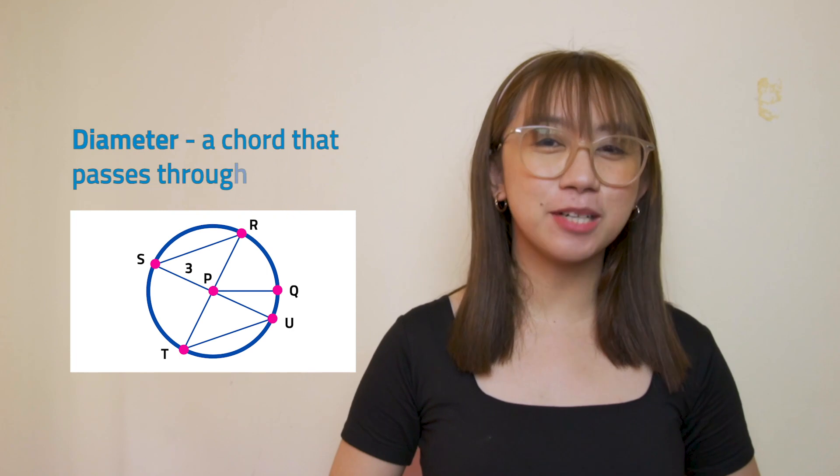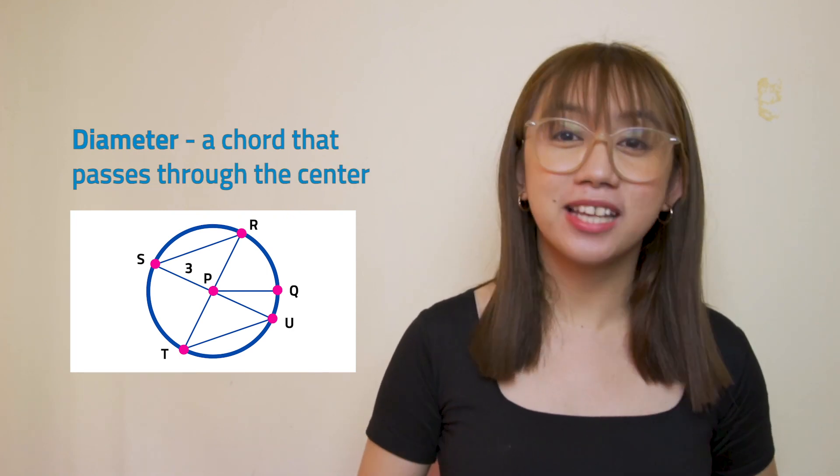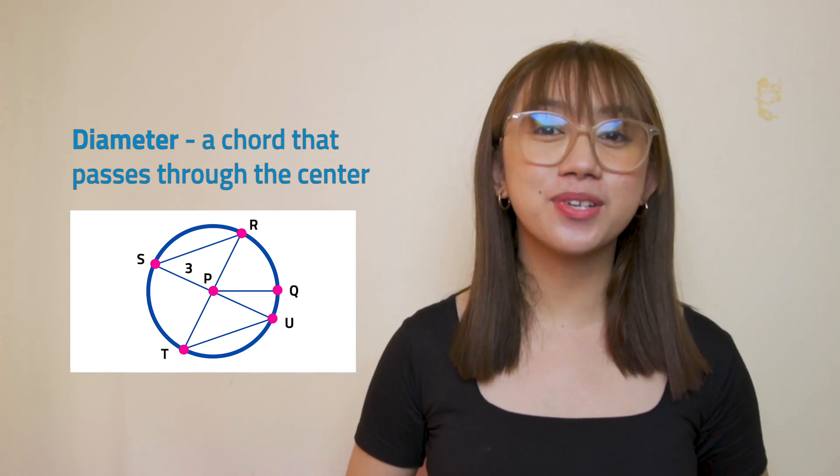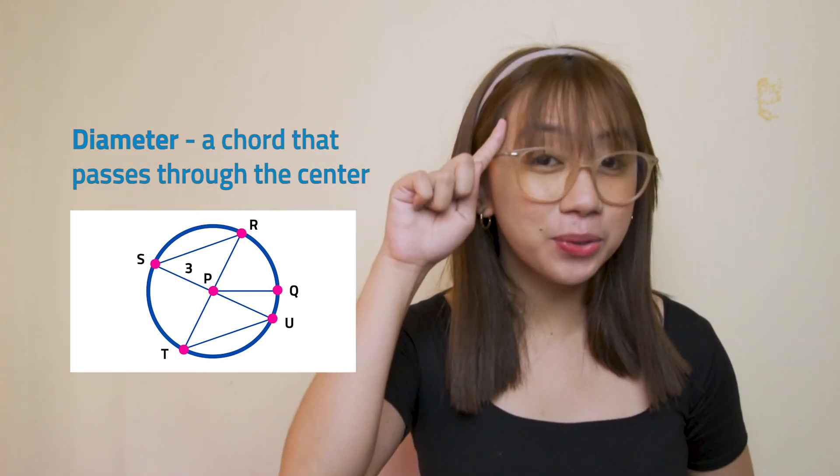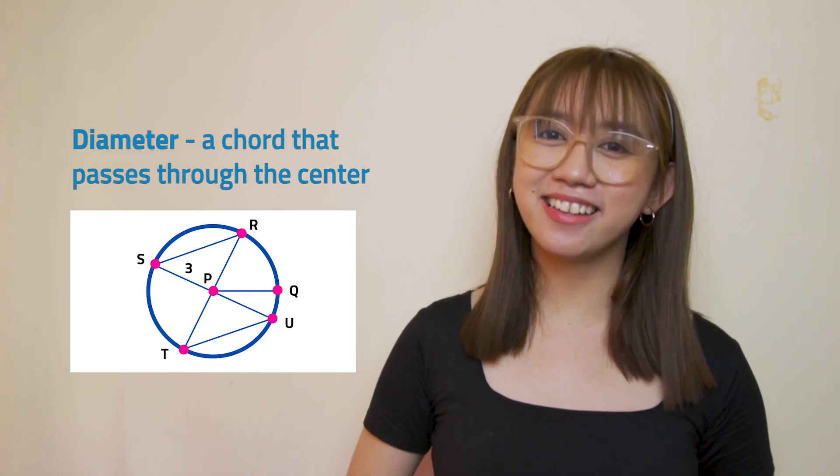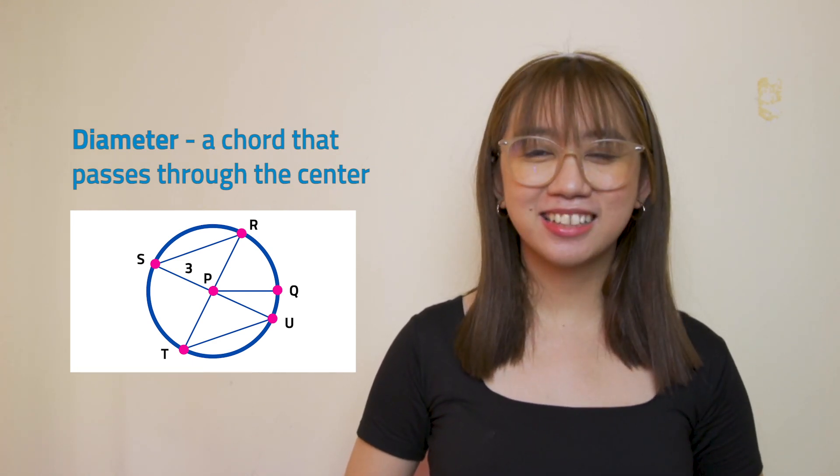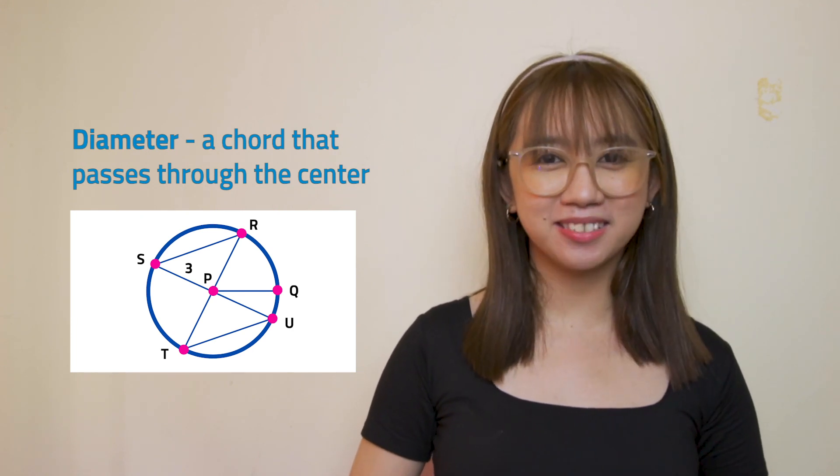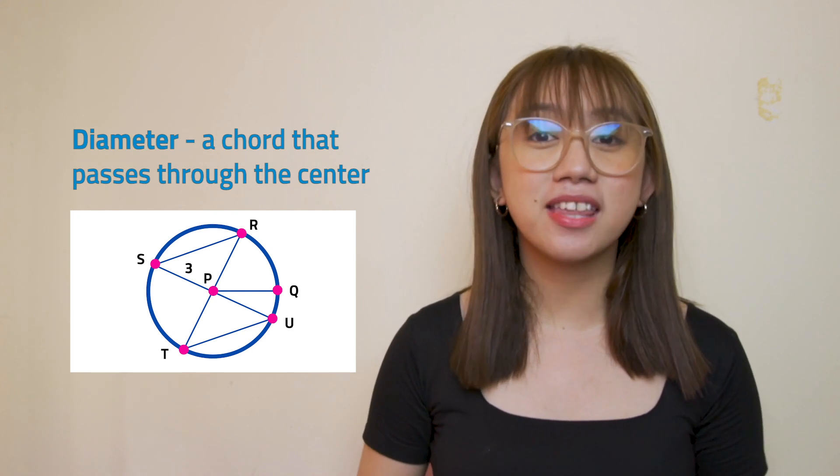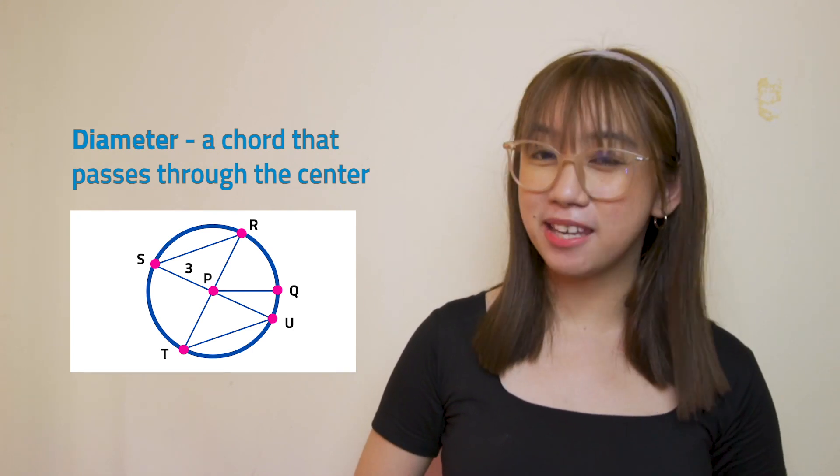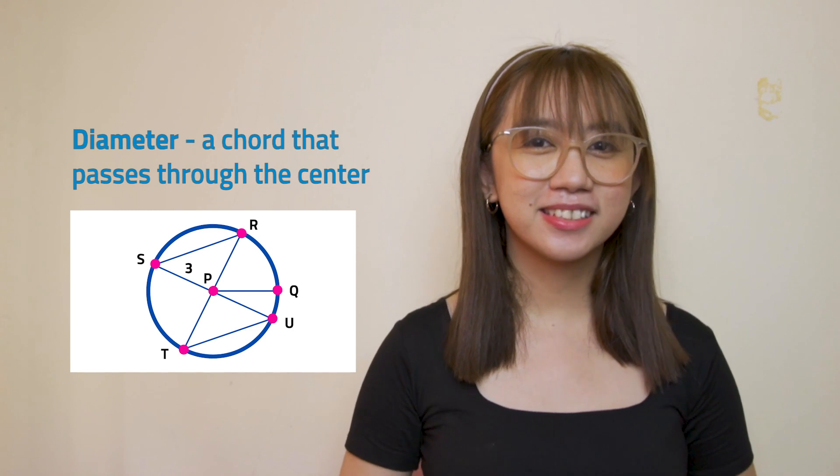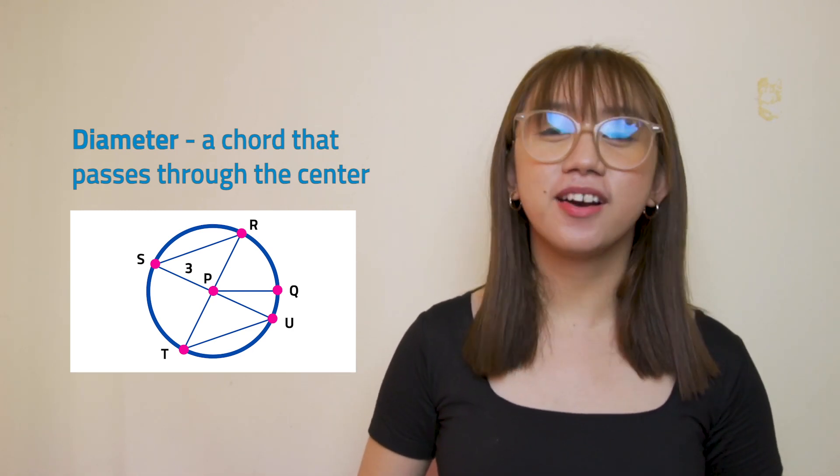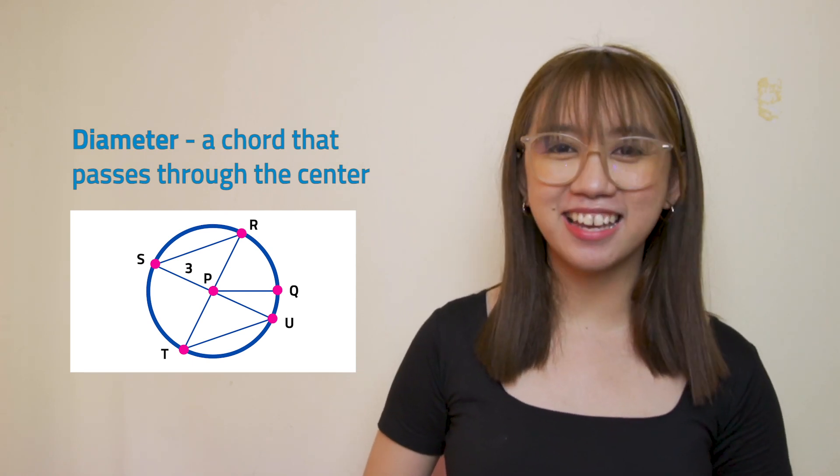Third is the diameter. It is a chord that passes through the center. In a circle, the longest chords are the diameters. Take note that a diameter has length twice the radius. The term diameter may also refer to the length of this chord. Now, can you identify the diameters in circle P? Awesome! The diameters in circle P are segments RT and SU.